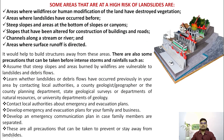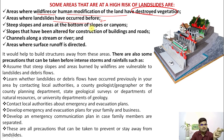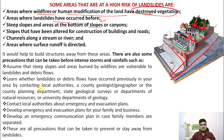Areas at high risk of landslides include areas where wildfires or human modification of land have destroyed vegetation — if there is loss of vegetation, there is a chance of landslides. Areas where landslides have occurred before are evidence that more could come. Steep slopes and areas at the bottom of slopes or canyons are most affected, as are slopes altered for construction of buildings and roads, and areas where surface runoff is directed.